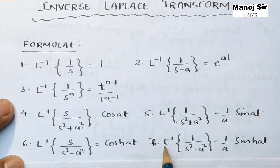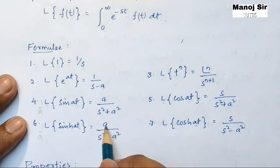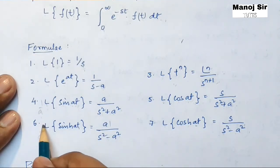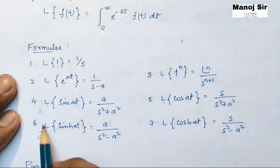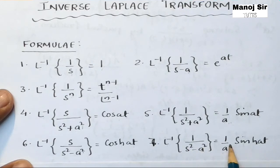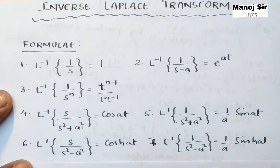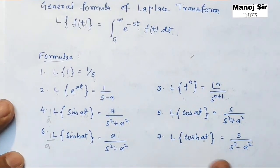Laplace transform of sinh(at) equals a / (s² − a²). Factoring out a, the inverse Laplace transform of 1 / (s² − a²) equals (1/a) · sinh(at). So inverse Laplace transform of 1 / (s² − a²) equals (1/a) · sinh(at).